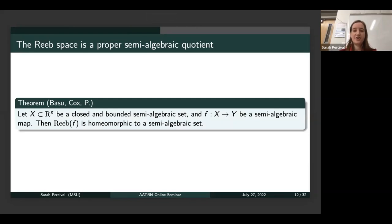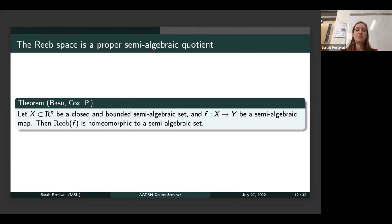Going back to a more theoretical setting, I mentioned earlier that we wanted to leverage algorithms from real algebraic geometry to study Reeb spaces, and in order to do that we need to make sure the Reeb space itself is actually a proper semi-algebraic quotient. So along with my advisor and a fellow graduate student Nathaniel Cox, we found that the Reeb space of a semi-algebraic set and map is homeomorphic to a semi-algebraic set. This justifies the semi-algebraic setting and allows us to now ask some computational questions about actually computing this Reeb space.